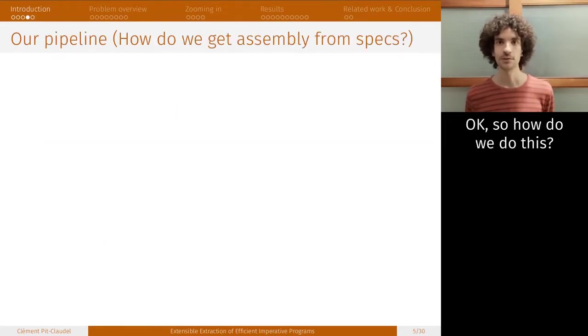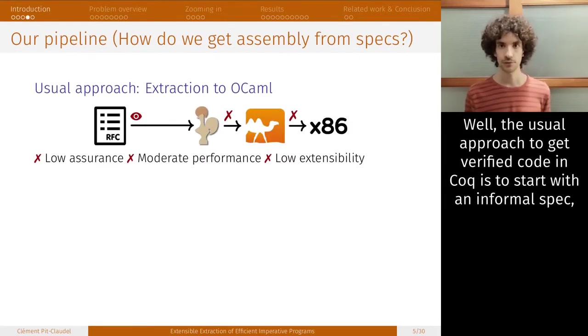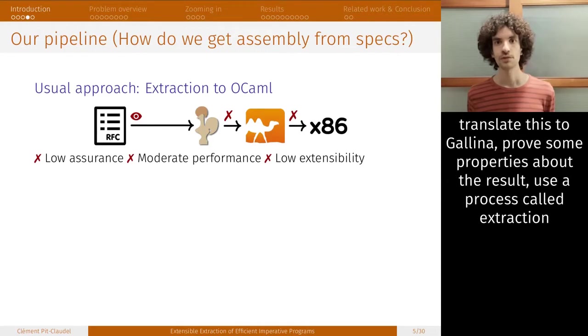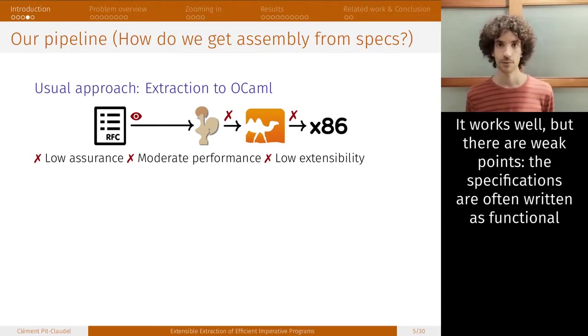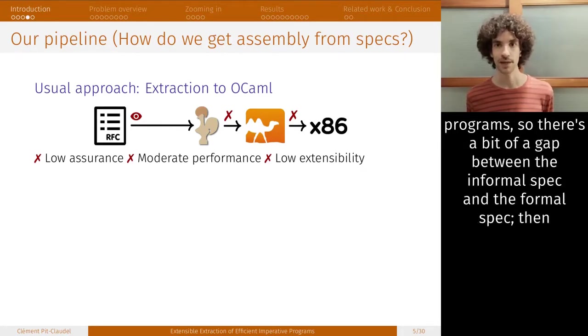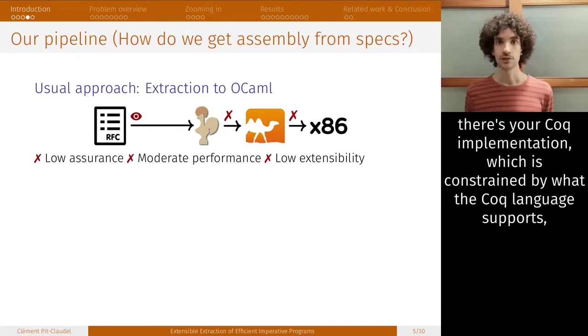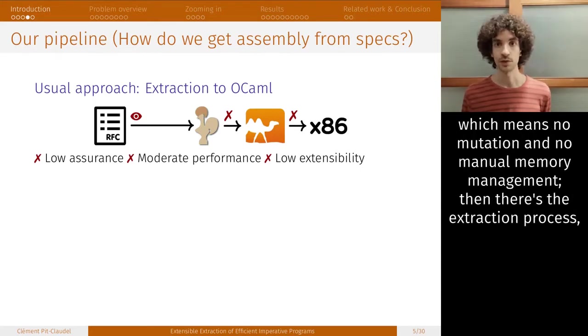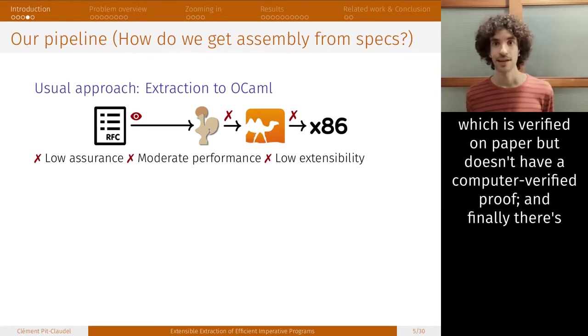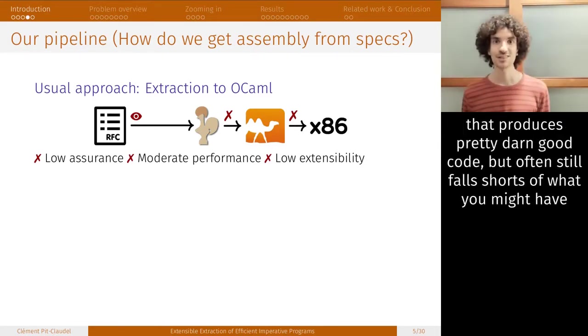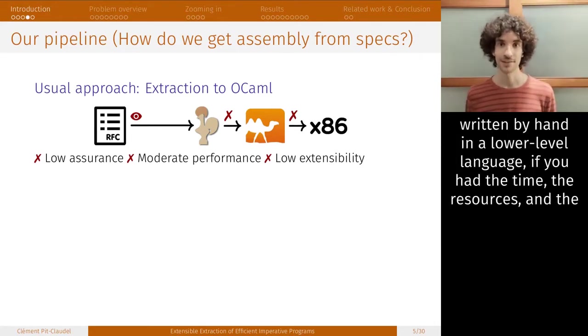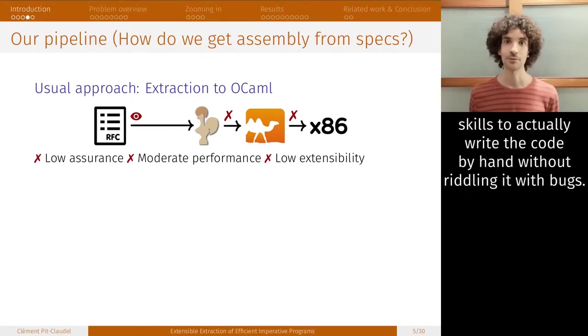So how do we do this? The usual approach to get verified code in Coq is to start with an informal specification, translate this to Galena, prove some properties about the result, use a process called extraction to obtain OCaml code, and then use the OCaml compiler to obtain binaries. It works well, but there are weak points. The specifications are often written as functional programs, so there's a gap between the informal spec and the formal spec. Then there's your Coq implementation, which is constrained by what the Coq language supports, which means no mutation, no manual memory management. Then there's the extraction process, which is verified on paper but doesn't actually have a computer-verified proof. And finally, there's the OCaml compiler, which isn't verified either.